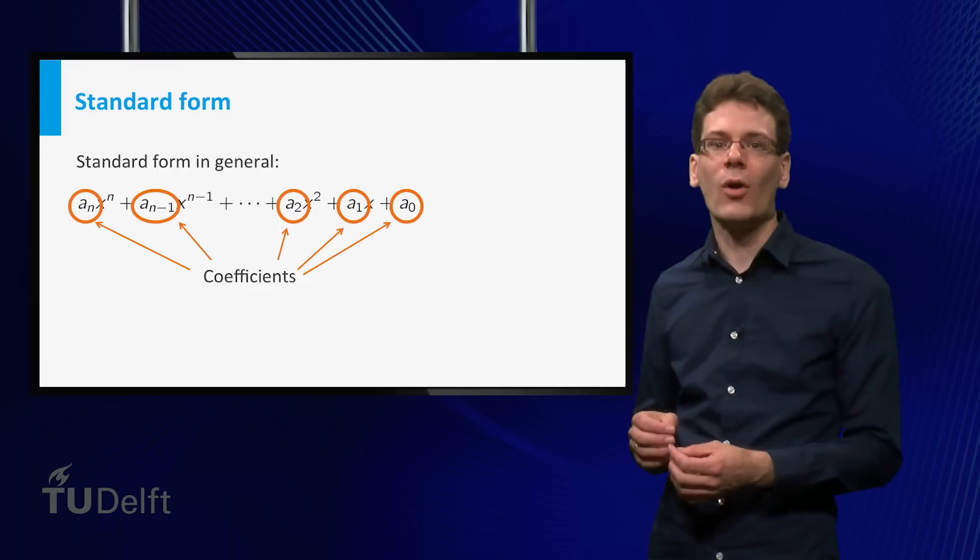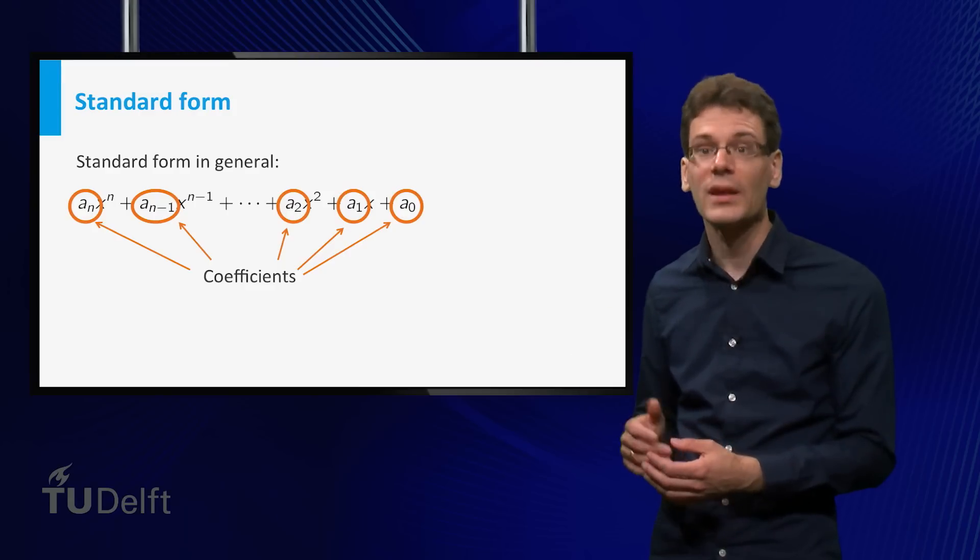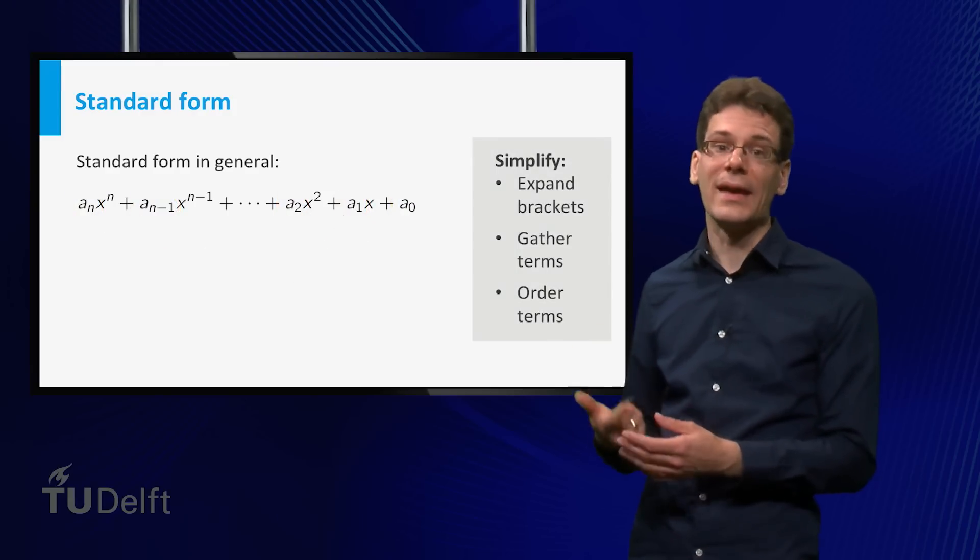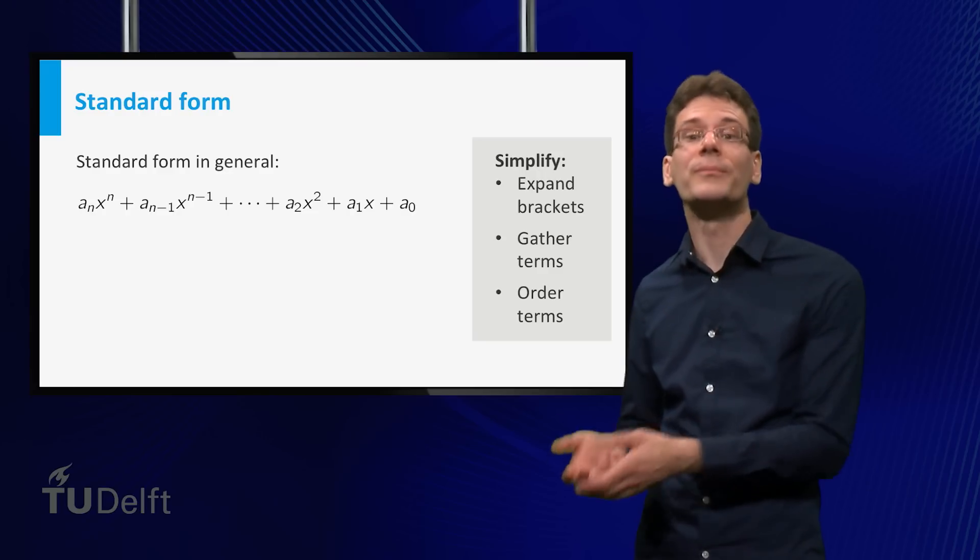A polynomial can always be put into standard form by following the simplification procedure that I sketched earlier. Get rid of brackets, gather the terms with the same power of x, and order the terms from high power to low power.